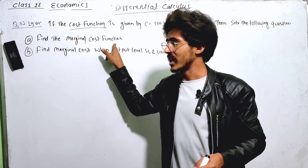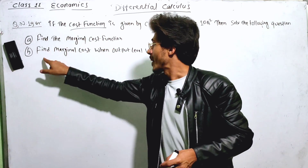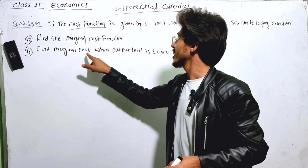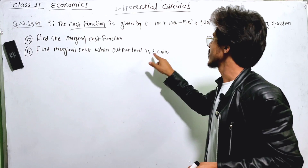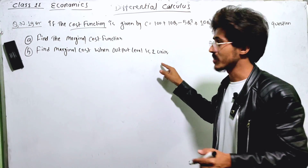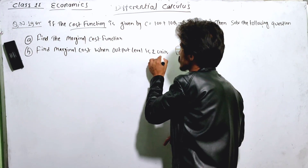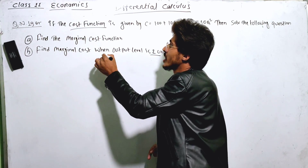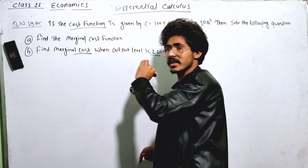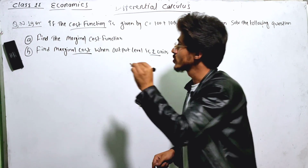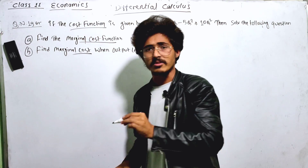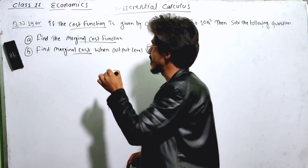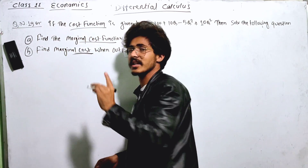Find the marginal cost function. Find the marginal cost when the output level is 2 units. The marginal cost function is derived from the cost function.